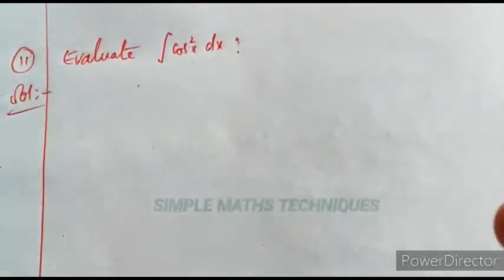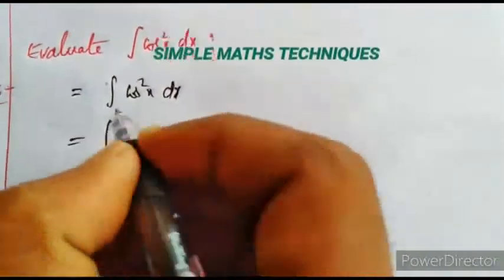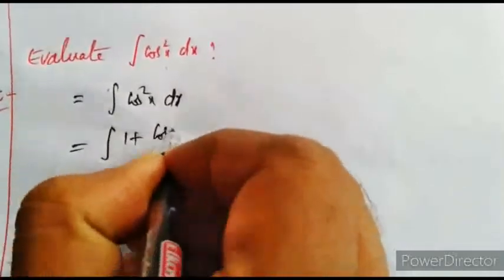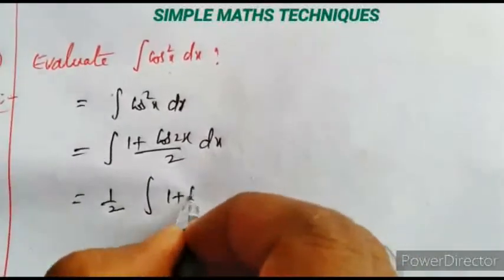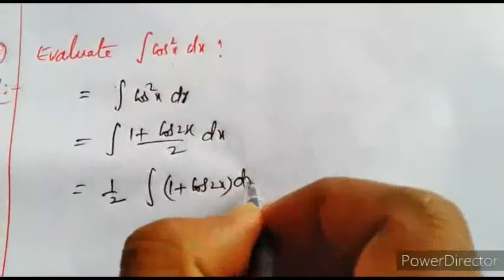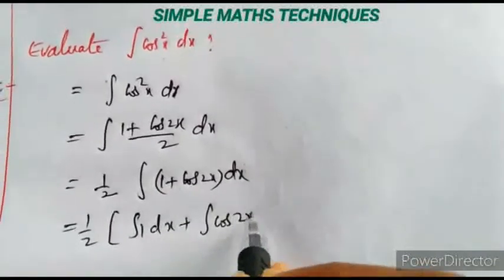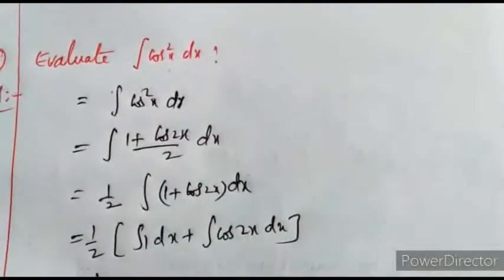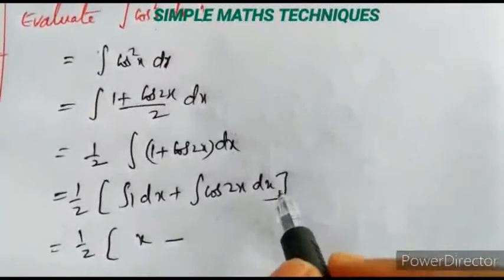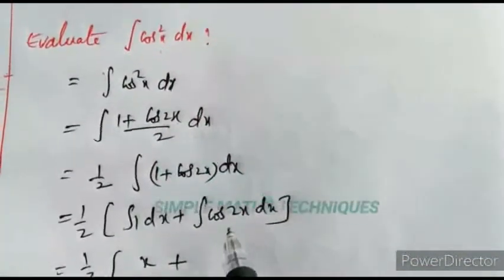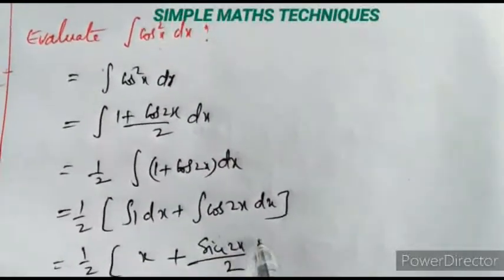Evaluate integration of cos²(x) dx. Using the identity cos²(x) = (1 + cos 2x)/2: 1/2 · integration of (1 + cos 2x) dx = 1/2 · (x + sin 2x/2) plus c. This is the solution.